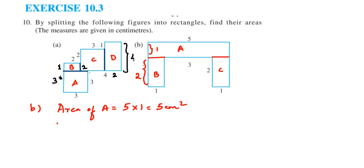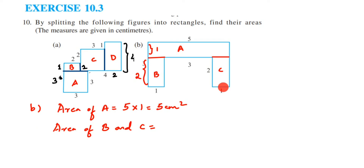Area of B and C: both are rectangles with the same dimensions. Length is 2 and breadth is 1, so area equals 2 × 1 = 2 centimeters squared each.